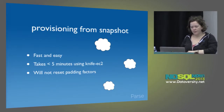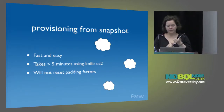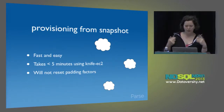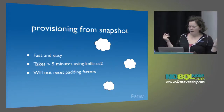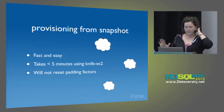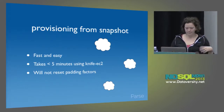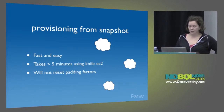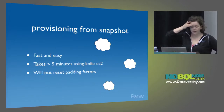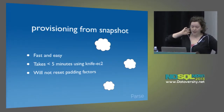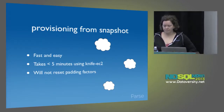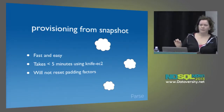There are two ways to provision new Mongo nodes: from initial sync — you bring it up, join it to the cluster, and it starts pulling down all the data — or from snapshots. Provisioning from snapshot is really fast and easy. It takes less than five minutes to provision a new node with Chef and Knife. And importantly for us, it will not reset your padding factors.